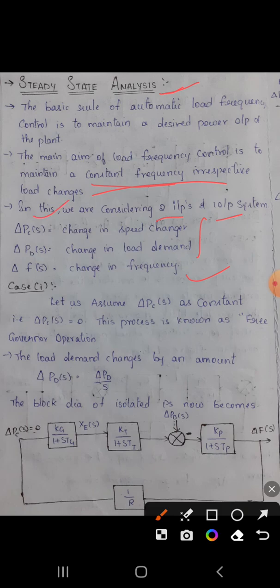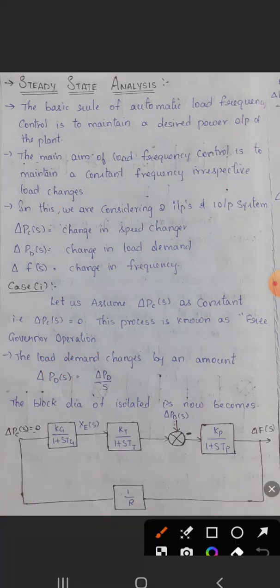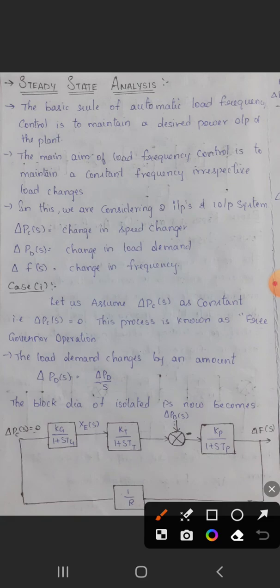The first input is PC of S. I already have a diagram in the previous isolated block diagram representation, and it is the same as this. PC of S means change in speed changer, PD of S means change in load demand, and F of S means change in frequency.